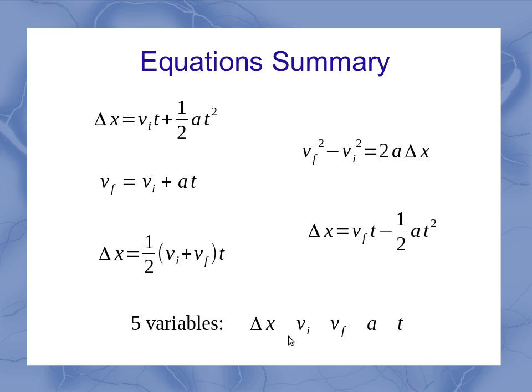So we've got five variables in total that are represented in all of these equations. And again, I want to remind you that some textbooks don't use v initial or v sub i. They might use v naught for the velocity at time zero.